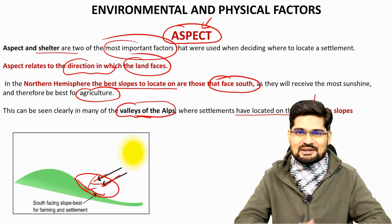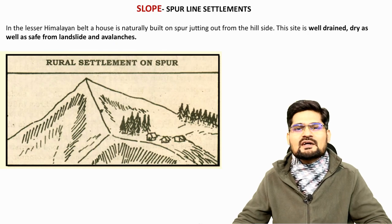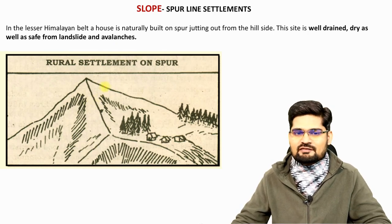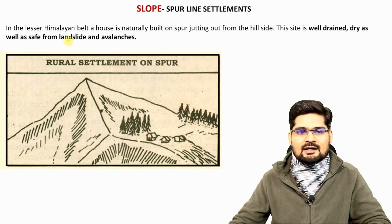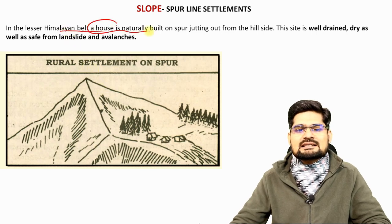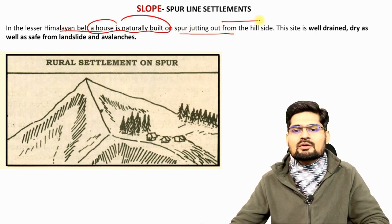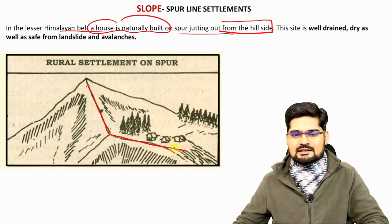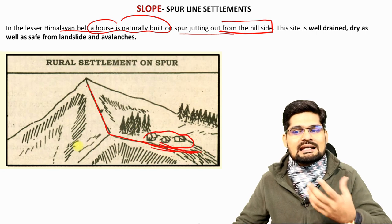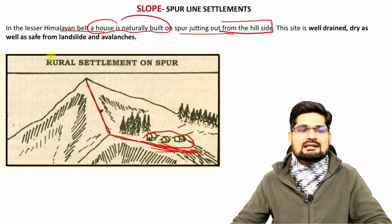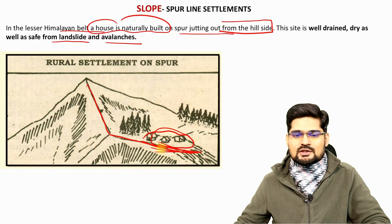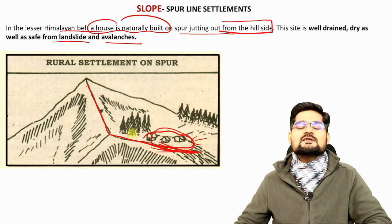South-facing slopes in the northern hemisphere receive the maximum duration of sunshine — that's very important to understand. In the lesser Himalayan belt, houses are naturally built on spurs jutting out from the hillside. These spur line settlements are more stable, well drained, dry, and safe from landslides and avalanches.